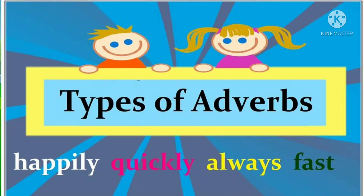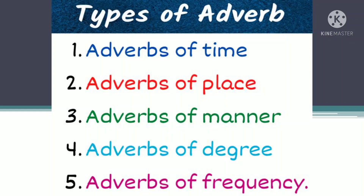Now let's see the types of adverbs. Adverbs can be of five types. Kriyavisheshan ke mukhya paanch bhed hote hain. First is adverbs of time. Second is adverbs of place. Third, adverbs of manner. Fourth is adverbs of degree. And fifth, adverbs of frequency.